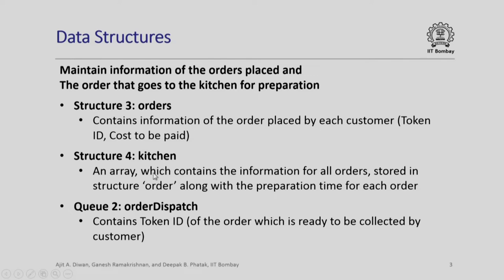Once all orders go to the kitchen, the items are prepared as per their preparation time. Different items will require different preparation times. In order to dispatch these orders, which are handled by another queue called order_dispatch, we need to sort this array in increasing order of preparation time, so that the order which requires minimum preparation time goes out first and so on. Finally, all orders which are ready for dispatch will end up in the order_dispatch queue, which contains the token ID of the order ready to be collected by the customer.